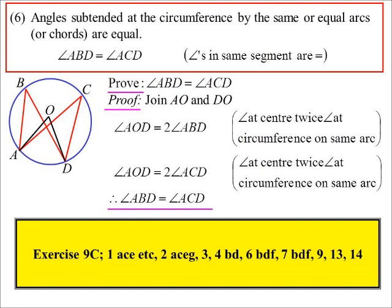All right, so 9c. I said I'd explain what I mean by same or equal arcs. We most commonly see them coming from the same one. But they could come from different arcs, as long as those arcs are of the same length.